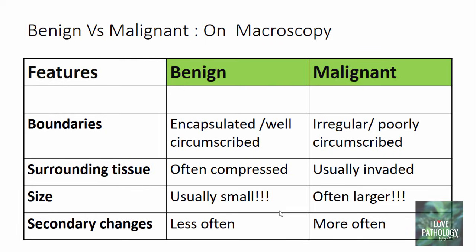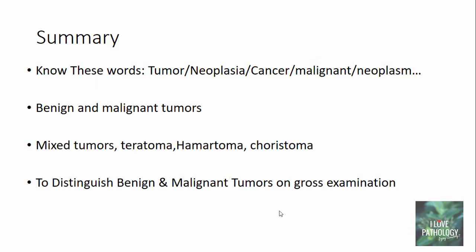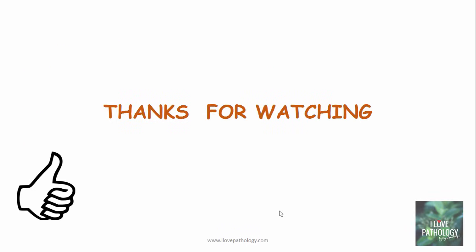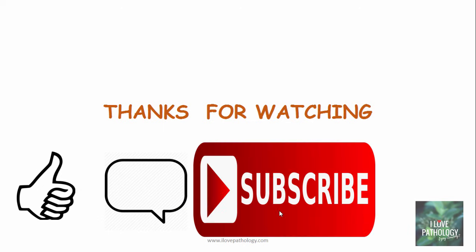In the next tutorial, I'll be discussing in detail the microscopic differences between benign and malignant tumors — talking more about anaplasia, dysplasia, and the concepts of invasion and metastasis. In summary, we understood what tumor, neoplasia, and cancer mean; the basic differences between benign and malignant tumors; and what mixed tumors, teratomas, hamartomas, and choristomas are, along with a few differentiating gross appearances. Thank you for watching. If you like this video, please hit the like button, comment, and don't forget to subscribe for more updates. Please do share. Thank you.